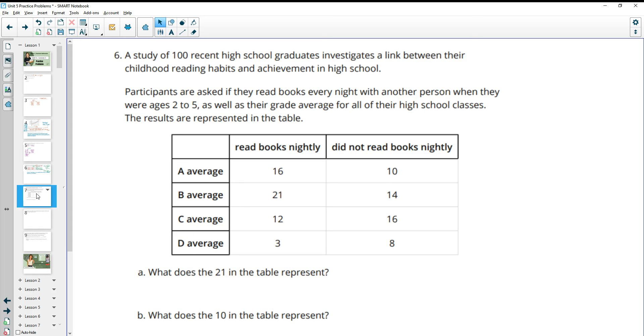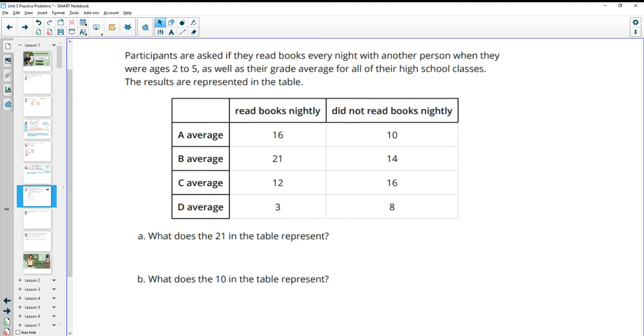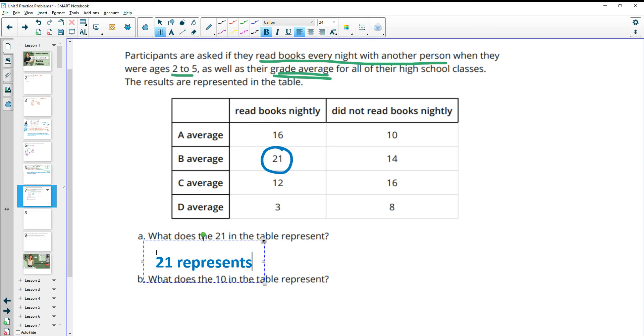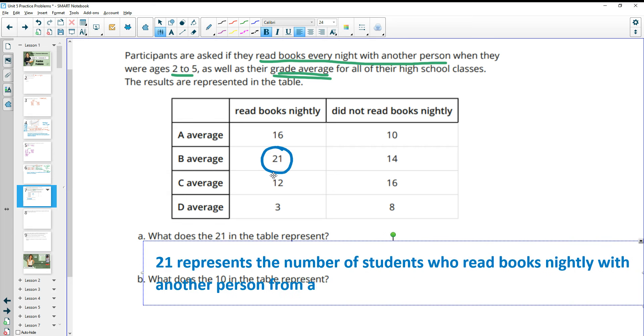Number 6, a study of 100 recent high school graduates investigates the link between childhood reading habits and achievement in high school. Participants are asked if they read books every night with another person when they were ages 2 to 5, and what's their grade average in high school classes? And here's the results. So what does the 21 represent? And so the 21 represents, and we just look at the two columns, the column and the row that it's in. So this represents, 21 represents the number of students who read books nightly with another person from ages 2 to 5.